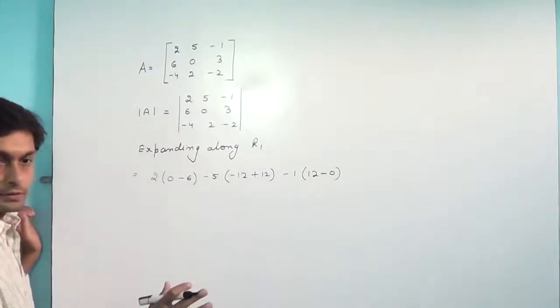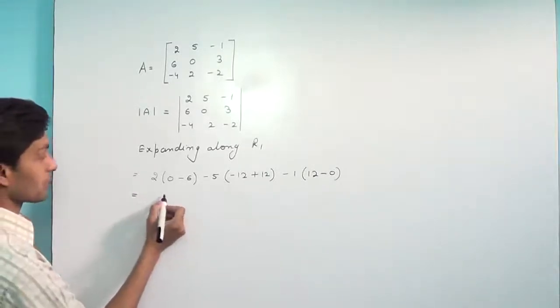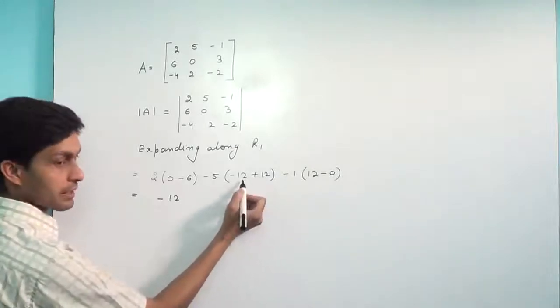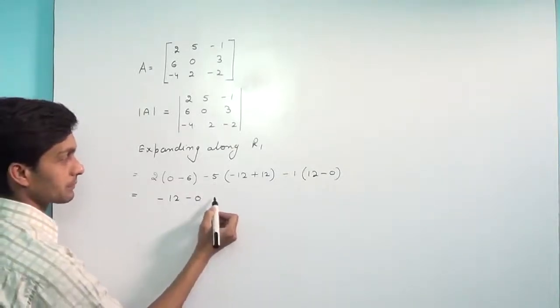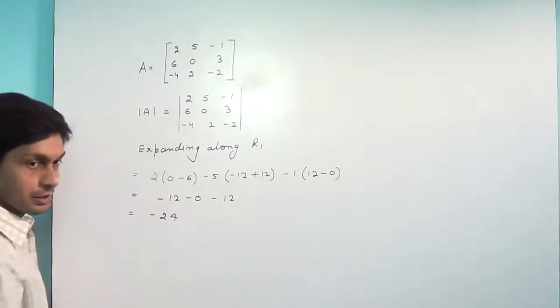So how will you get your answer? Minus twelve. This is zero here. Zero times anything is zero here. Minus twelve. That gives us minus twelve.